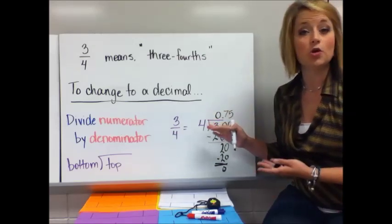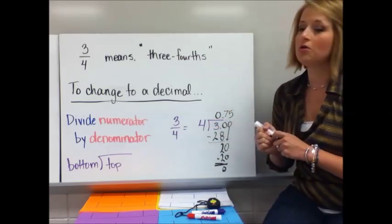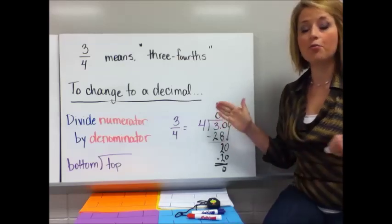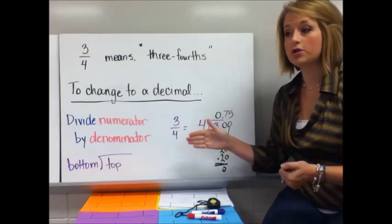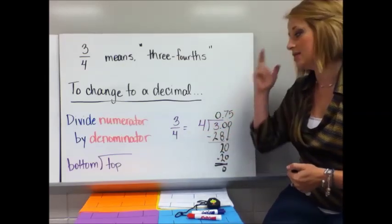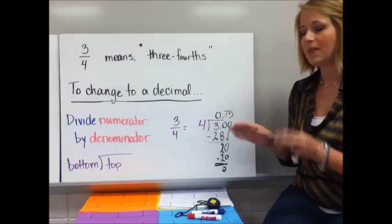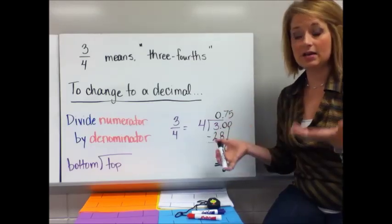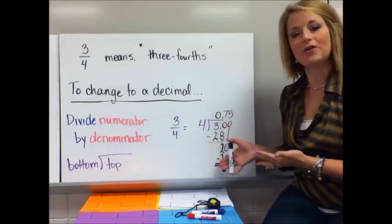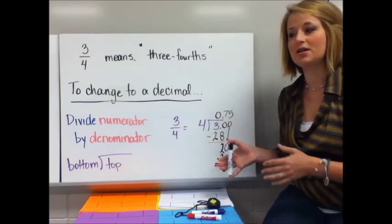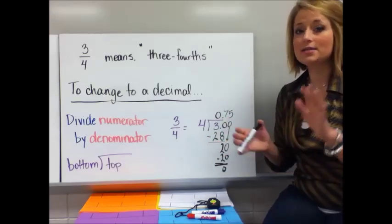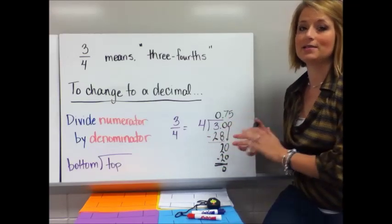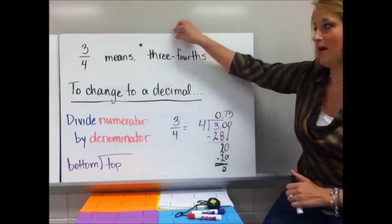This is one that you knew off the top of your head — you knew that three-fourths was 0.75, probably because if you have three quarters, you have 75 cents. I'm all for you having these memorized. If you do have these memorized, there's no need to do long division. So the more that you memorize, the less long division you have to do.